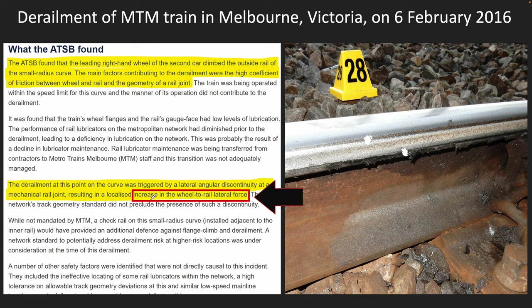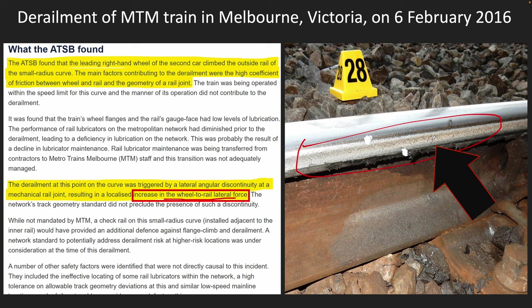Whenever investigators investigate, they're looking for marks on the rail which show whether the wheel climbed the rail or not. In this scenario, you can see the wear marks on the rail which shows that the wheel climbed the rail, and that's what they've written in their findings.